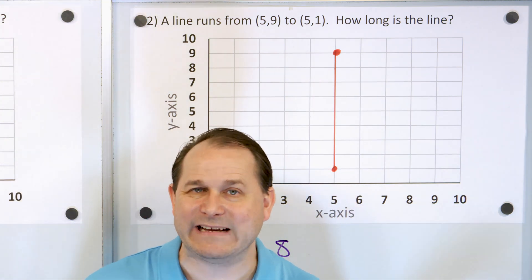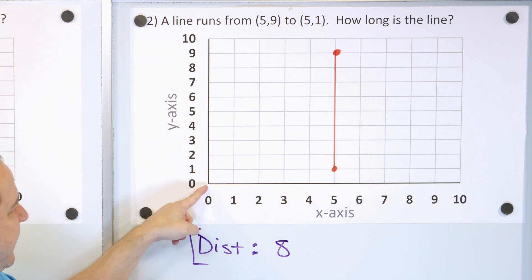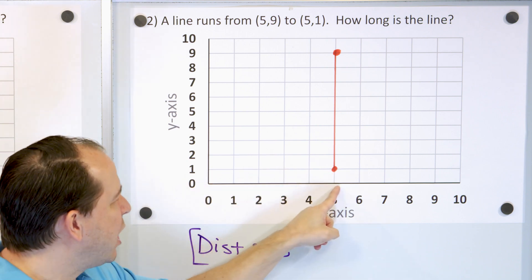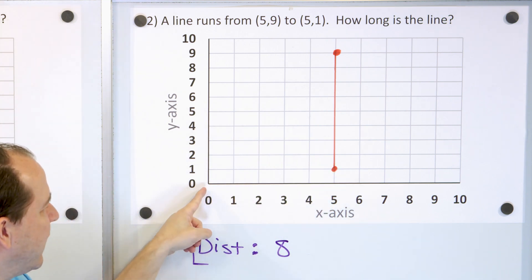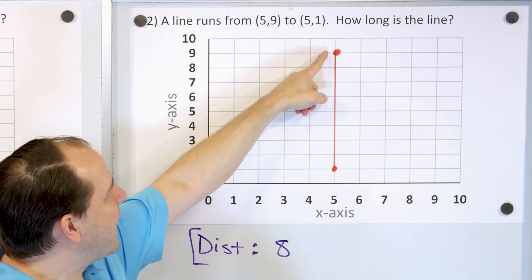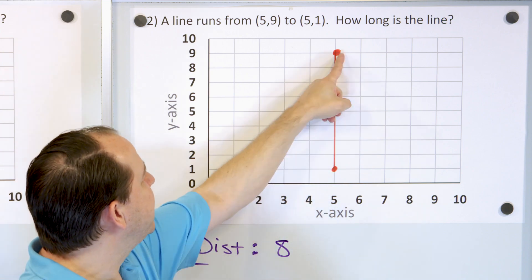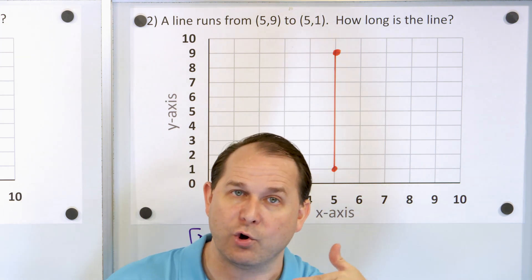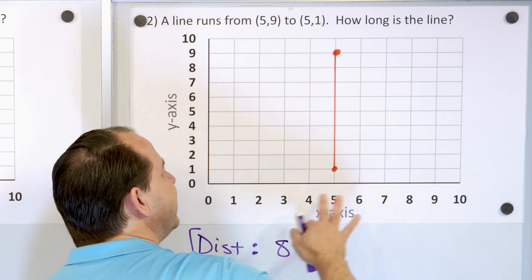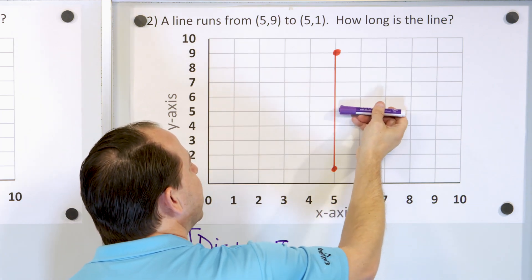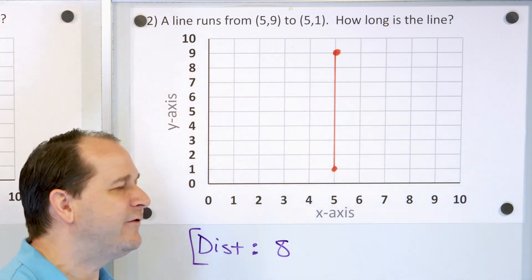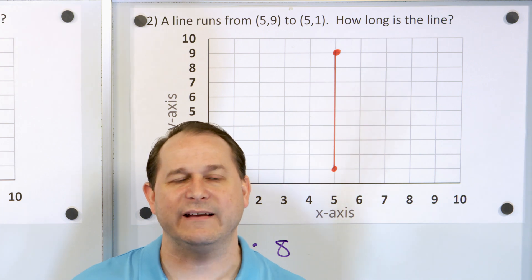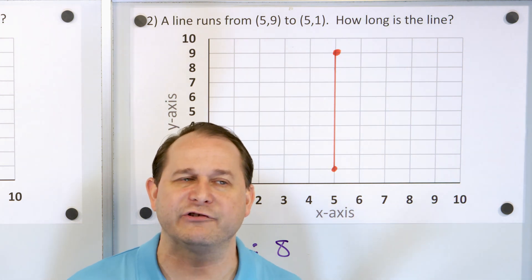We could have the city center at the zero, zero point. Then this might represent my home — 5 kilometers east and 1 kilometer up — and my work is up here, 5 kilometers east and 9 kilometers up. So the question would be, how far is it from my home to my work? Counting in kilometers: 1, 2, 3, 4, 5, 6, 7, 8 kilometers away. That's just one example — it could represent lots of different things, but that is what we use coordinate systems for.